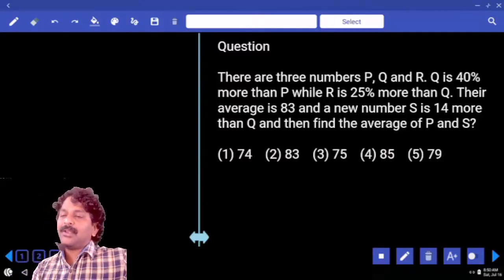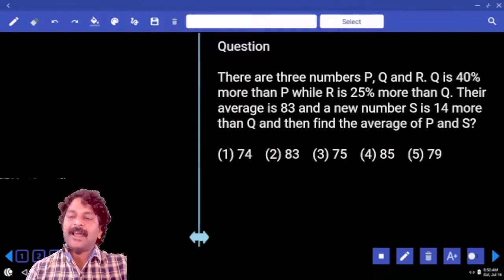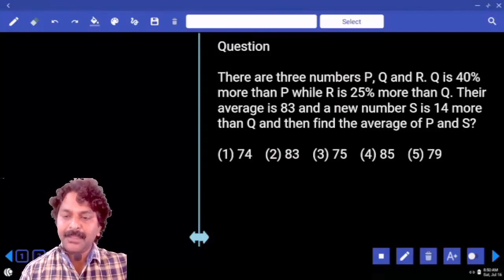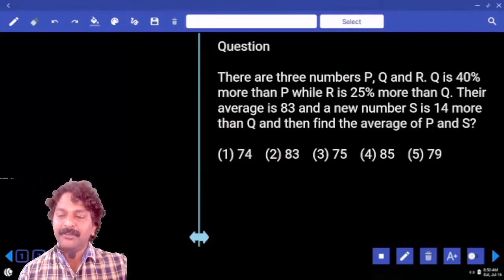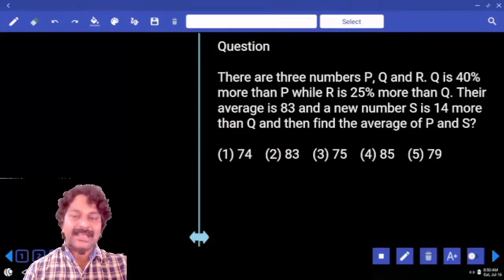There are three numbers P, Q, R. Q is 40% more than P while R is 25% more than Q. Their average is 83 and a new number S is 14 more than Q. Then find the average of P and S.